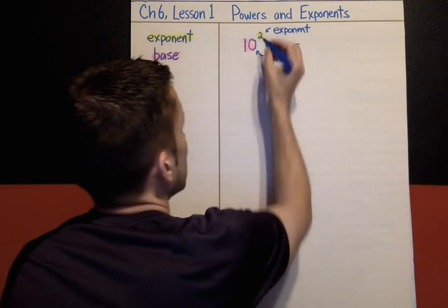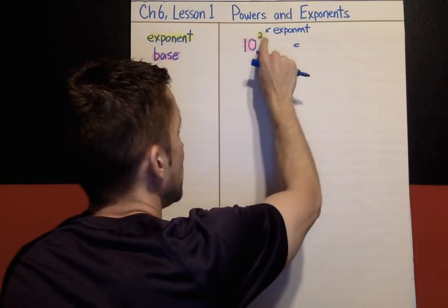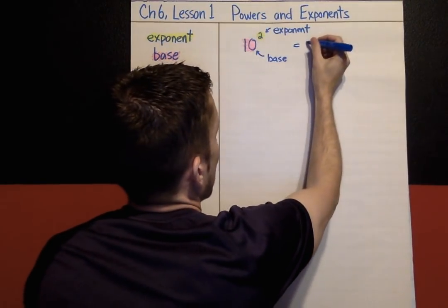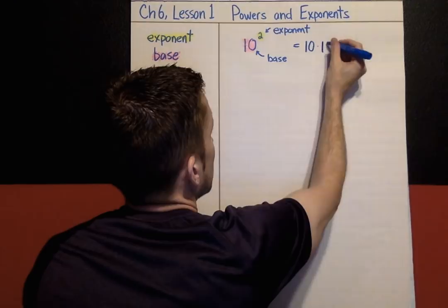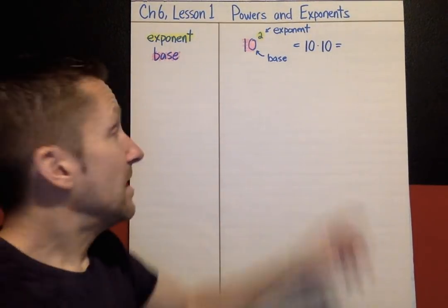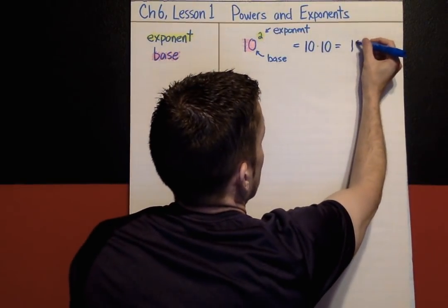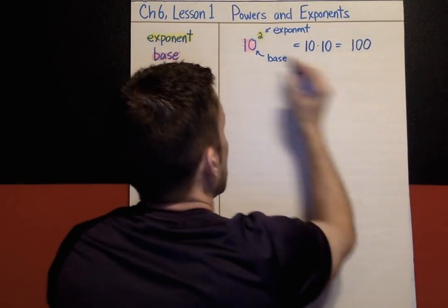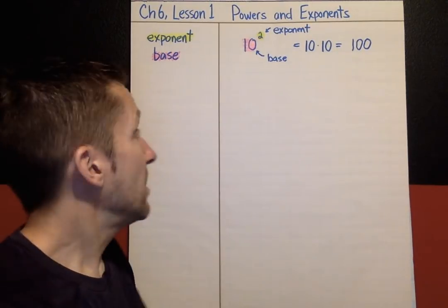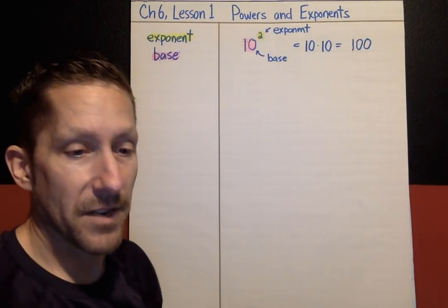The exponent tells you how many times the base is being multiplied by itself. So what this means is that 10 is being multiplied by another 10. The base is written down twice: 10 times 10. And that's not 20 — 10 times 10 is 100. So the answer to 10 to the second power, or 10 squared, is 10 times 10, and that is 100.